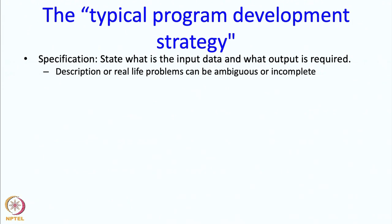So this begins with the description of the specification. The specification simply and very concisely usually states what the input data is and what the output required is. Now, if you are writing a program to solve a real life problem, then the statement that might be given to you might be ambiguous or might be incomplete and so when you write down the specification, you should try to make it as precise and as complete as possible.